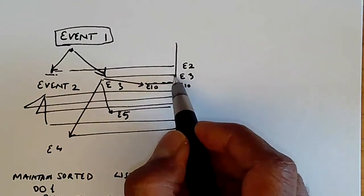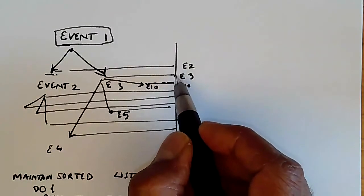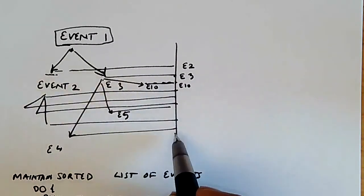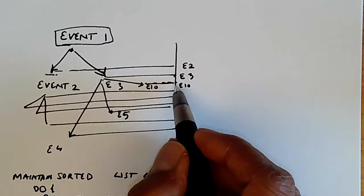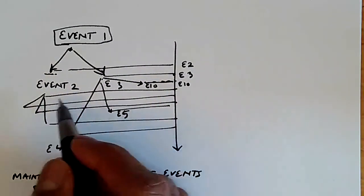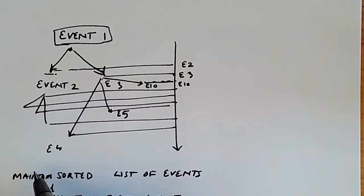And then the next event to be executed is three. So E3 executes and says, oh, my next event is E ten. And then there's some other events. So E ten gets executed, and so on and so forth. So all the events execute, but the strict time ordering between events is maintained.